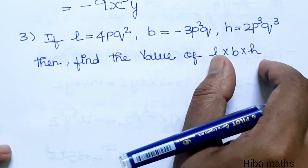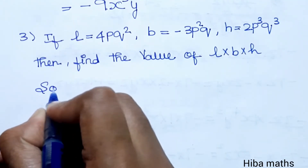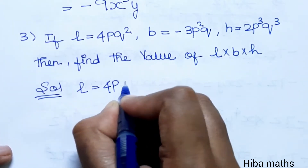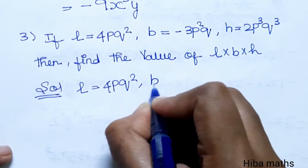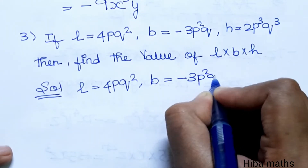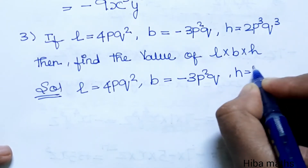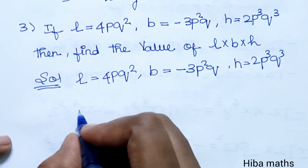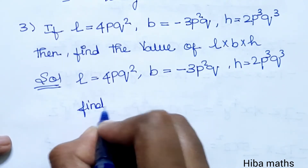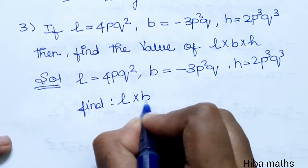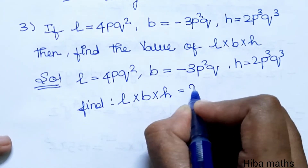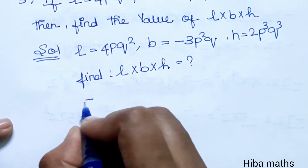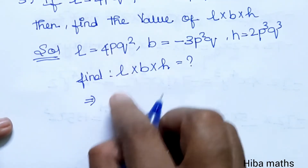Let's solve this. Solution: given values are L is equal to 4PQ squared, B is equal to minus 3P squared Q, H is equal to 2P cubed Q cubed. We need to find the value of L into B into H.